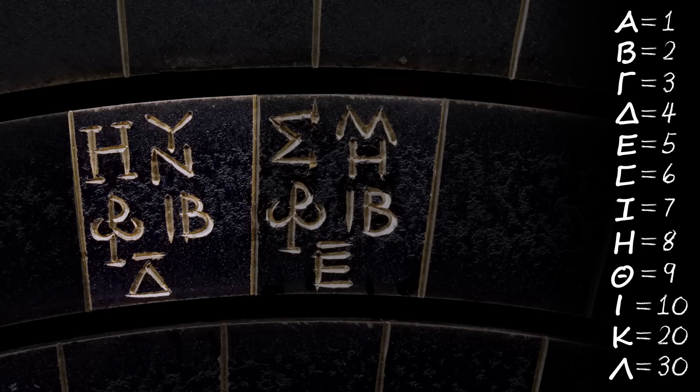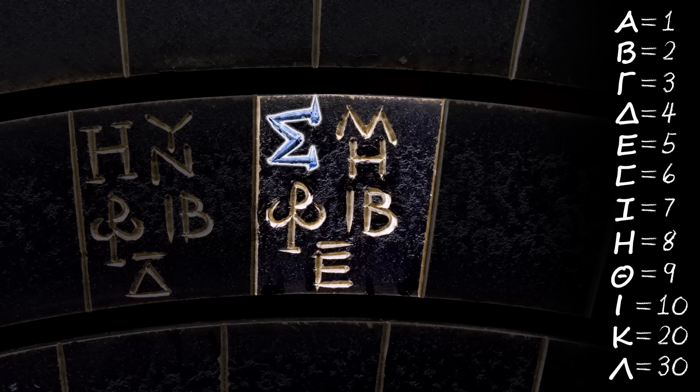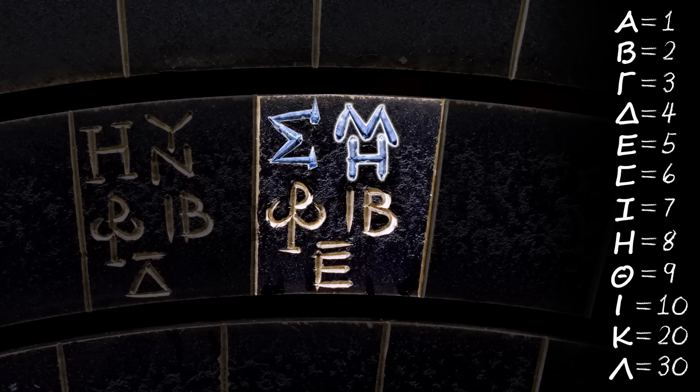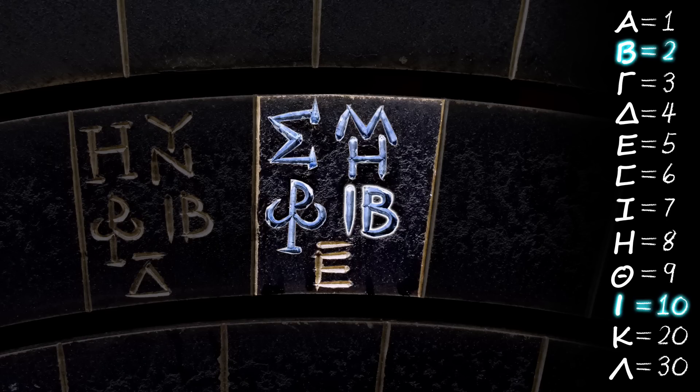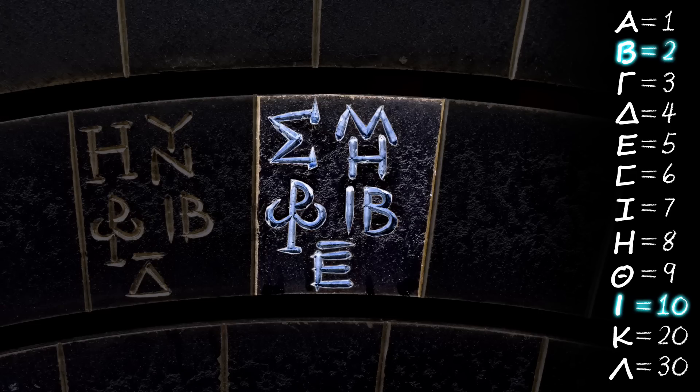The cell on the right indicates a lunar eclipse, with the presence of the Imeras abbreviation indicating that it's during the day. It's also predicted to occur at the 12th hour. And in this case, the index letter is an epsilon with a bar.